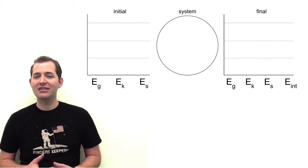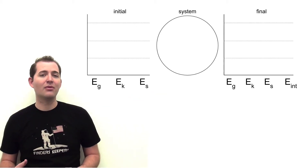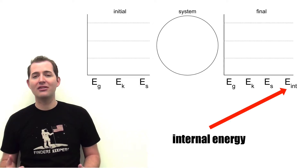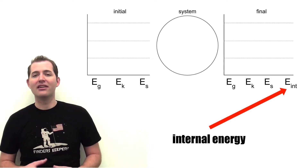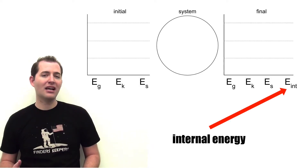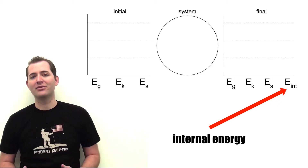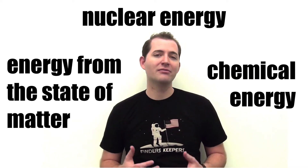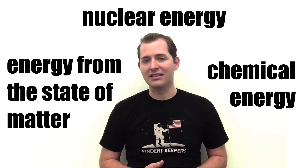In the graph representing the final energy of the system we also include internal energy. This includes things like heat or sound where energy may be transferred to. The three types of energy we're including are pretty standard for physics, but we could include any type of energy that's available — for example, nuclear energy, chemical energy, or even energy from the state of matter that the object is in.